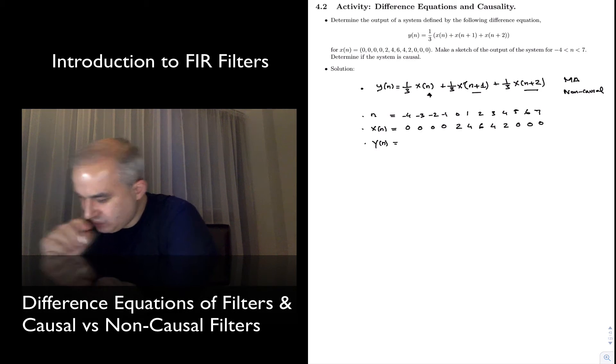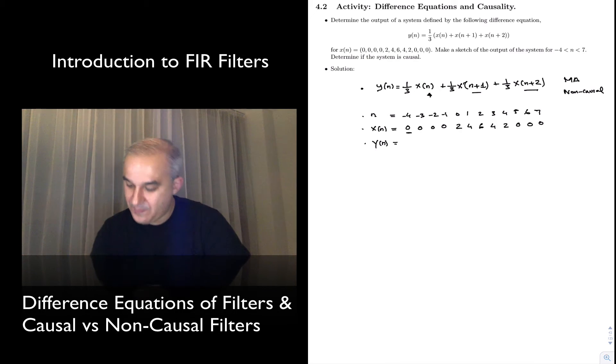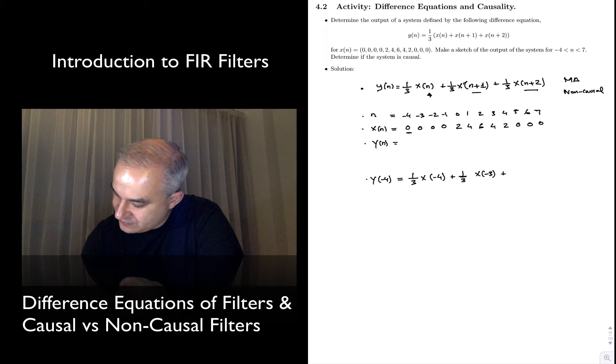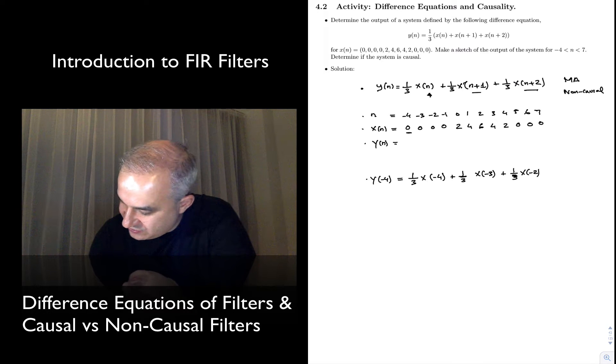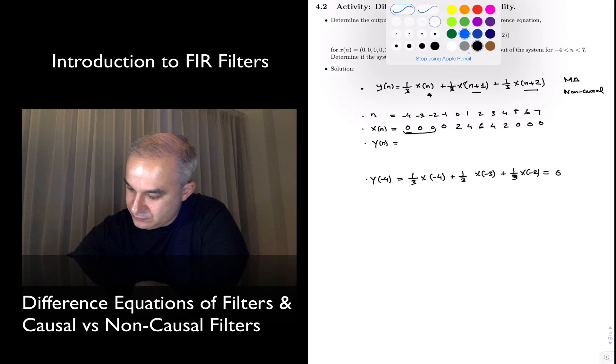So, at this point, notice that for a particular sample, like x of n minus 4, or to calculate y minus 4, what do we have here? This will be 1/3 x of minus 4, plus 1/3 x of minus 3, 1/3 x of n minus 2. So, we are talking about these three values right here. And what we see is 0, plus 0, plus 0, multiplied times 1/3, gives us 0. So, our output is 0.